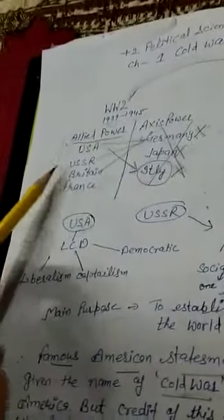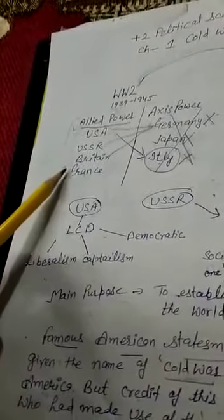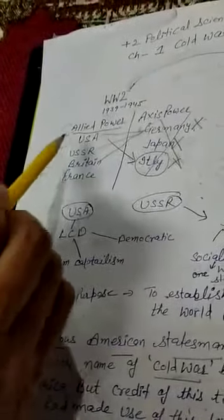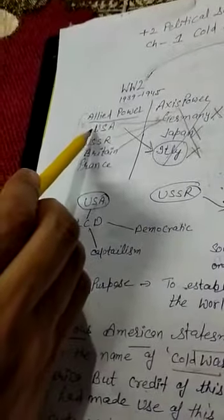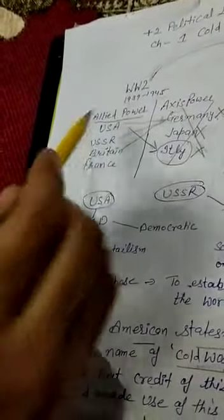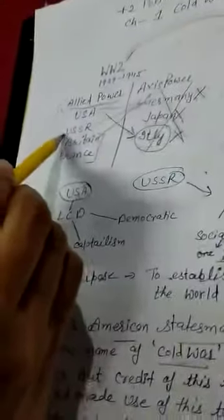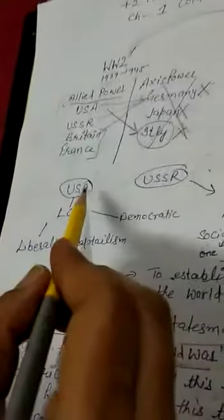So which power remained? Allied power. Allied power had four countries: USA, USSR, Britain and France. But Britain and France were smaller compared to USA and USSR. So USA and USSR emerged as the two superpowers.